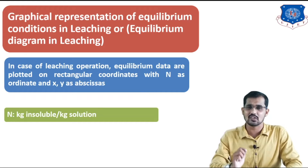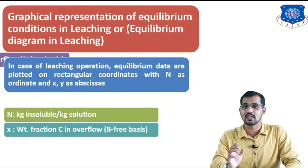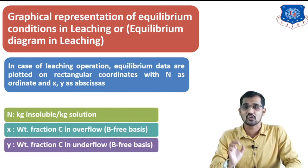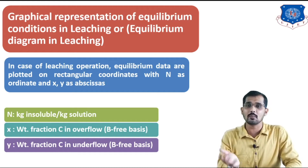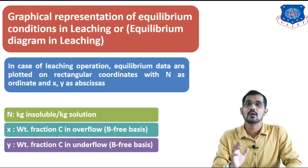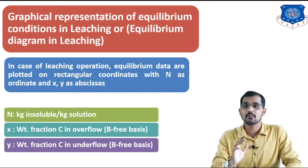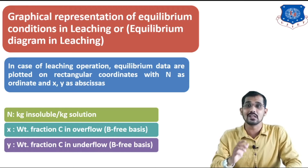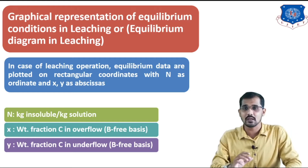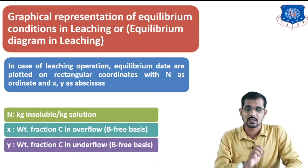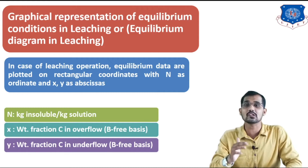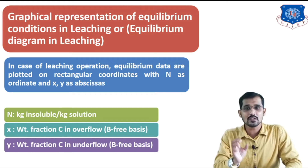N is nothing but kg of the insoluble per kg of the solution, and x and y are nothing but the weight fraction of the solute which we want to remove from the solid on a B-free basis in overflow and underflow respectively. B-free basis means in the denominator we are not going to consider B, that is the insoluble. Whenever we are writing x and y as weight fractions in leaching, we always write them on the insoluble-free basis. B is nothing but your insoluble solid.